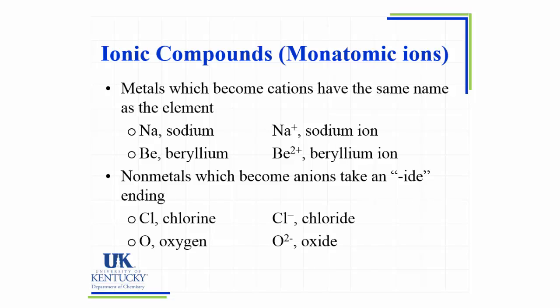So sodium becomes sodium plus and we call it a sodium ion. Beryllium becomes the beryllium ion — nothing really changes when identifying the name of the ion. Anions, which are non-metals that are gaining electrons, change the ending of their name to -IDE. So chlorine becomes chloride, oxygen becomes oxide, sulfur becomes sulfide, and we keep that suffix when we form the name of the actual compound.